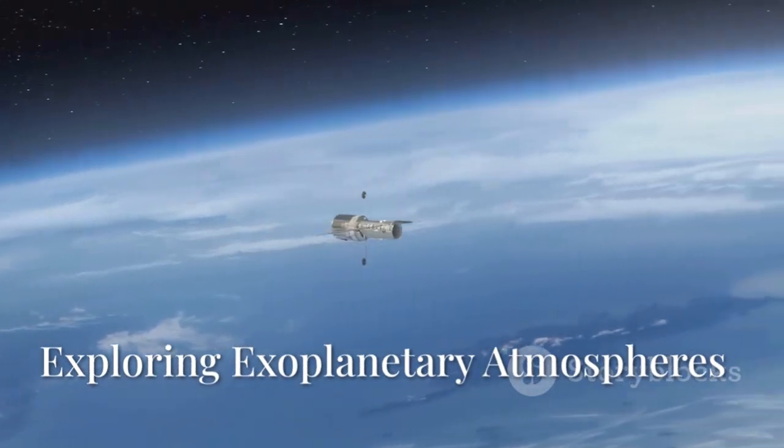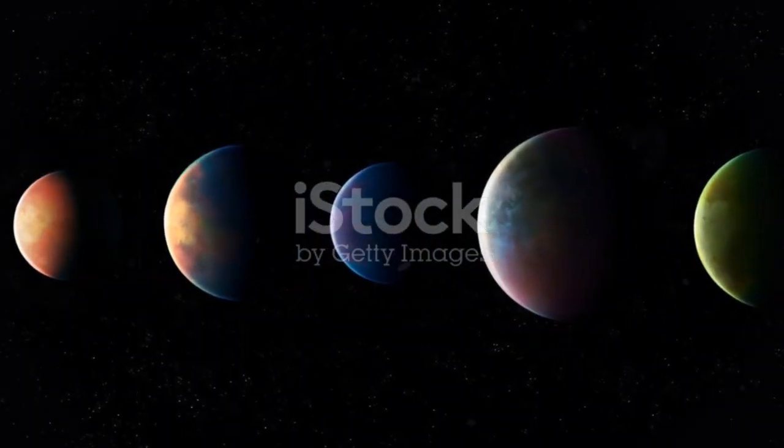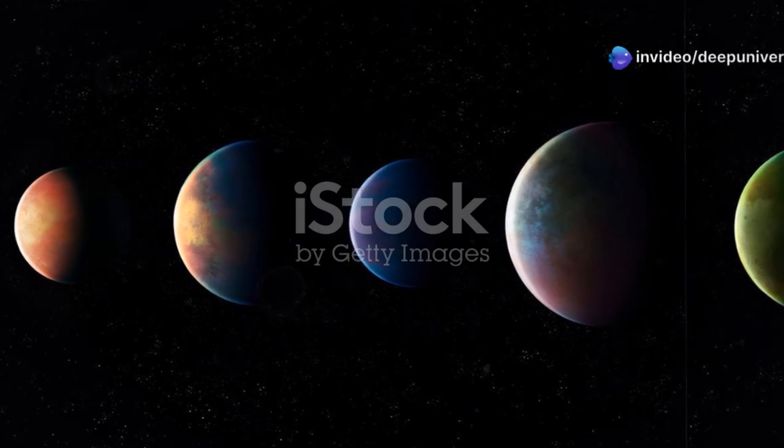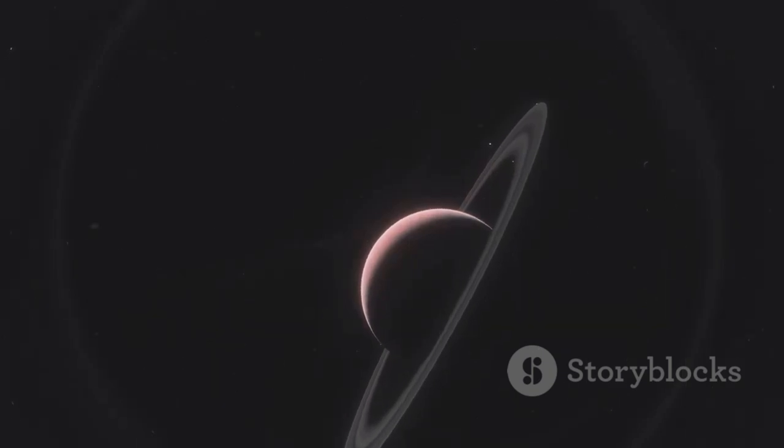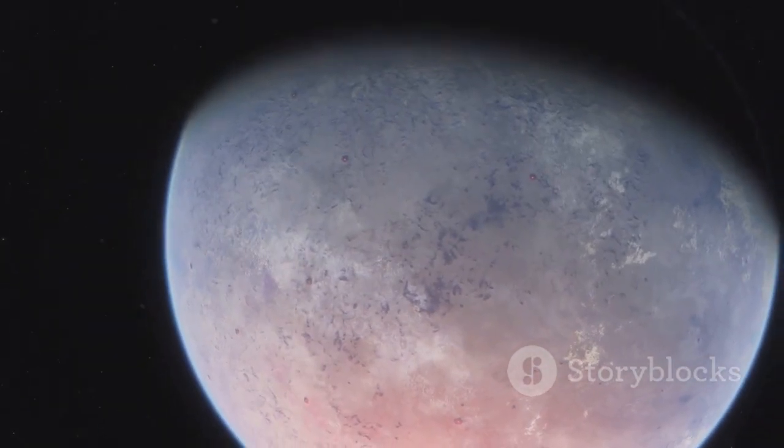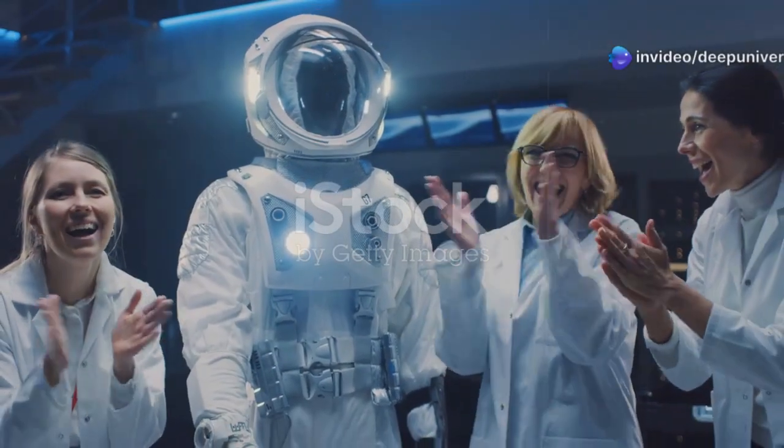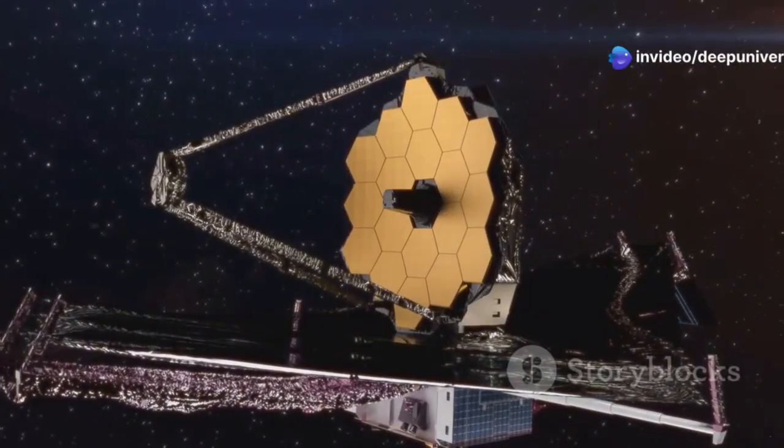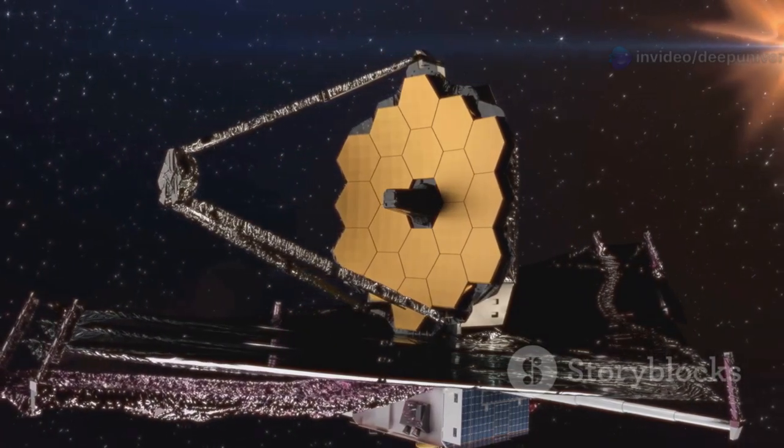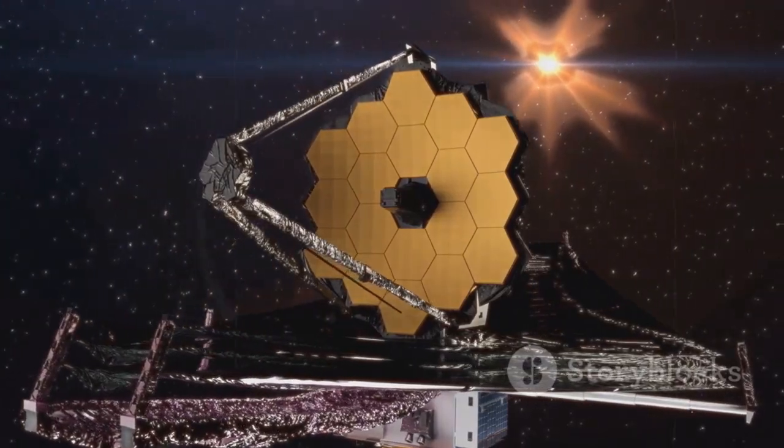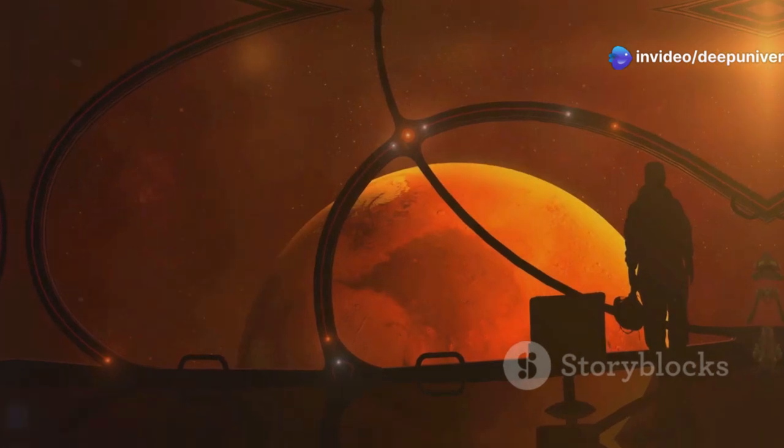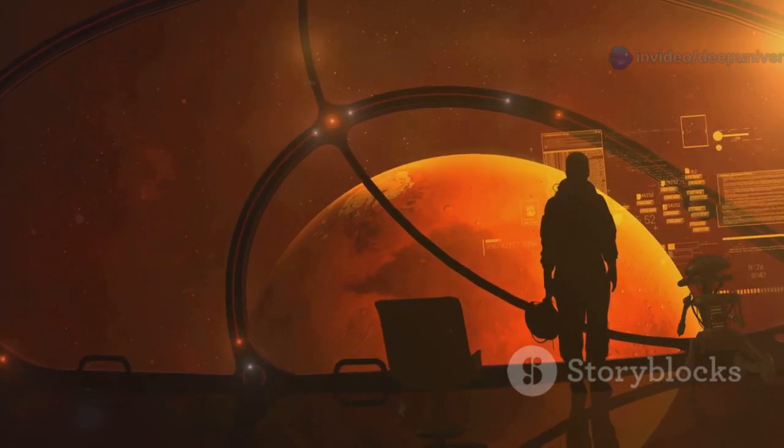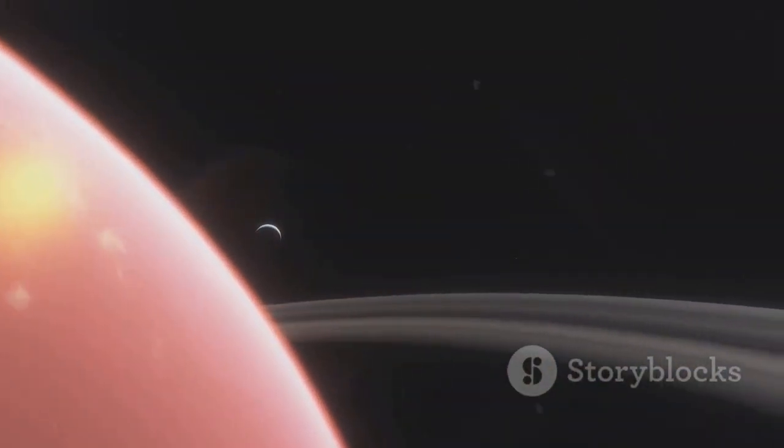In addition to studying the distant universe, JWST is also being used to study planets orbiting other stars known as exoplanets. The telescope is able to study the atmospheres of these planets, searching for signs of life. JWST has already detected water vapor in the atmosphere of at least one exoplanet. This discovery is a major step forward in the search for life beyond Earth. It demonstrates the power of JWST to characterize the atmospheres of exoplanets and to search for signs of habitability or even life itself. The telescope's ability to study exoplanetary atmospheres in detail is unprecedented. By analyzing the light passing through these atmospheres, JWST can identify the chemical composition of the gases present. This information can provide clues about the planet's potential for harboring life as we know it.